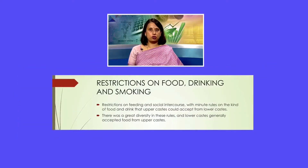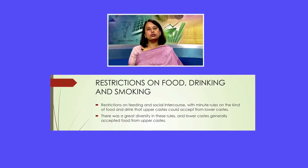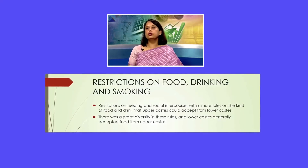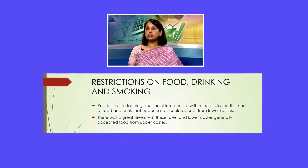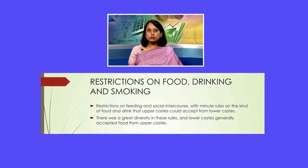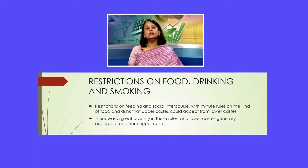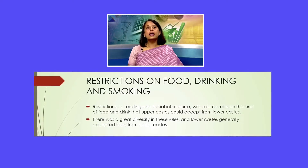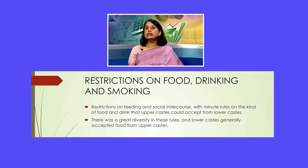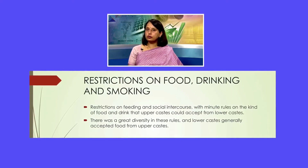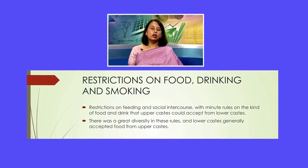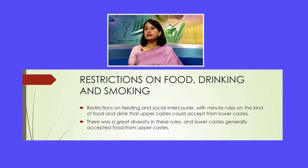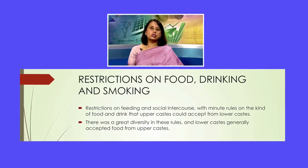The second characteristic of caste has to do with restrictions on food, drinking and smoking — or in short, commensal relationships. Different caste groups could not interact with one another randomly; there were strict rules each caste group had to follow in terms of food and drink. Generally, it was only the pakka food which was accepted by the higher castes from the lower castes, and not the kaccha food. Pakka food was something cooked in ghee, and kaccha food was cooked in water. So foodstuffs like khichdi or dal cooked in water could not be offered to the higher castes, whereas foodstuffs fried in ghee were considered to be pure.